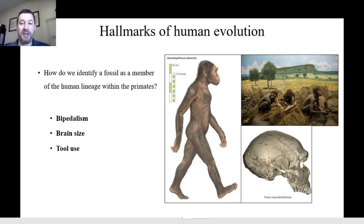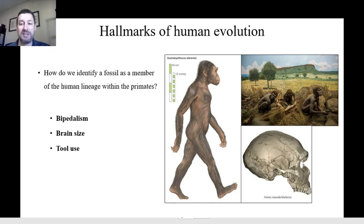There are three traits that we generally look for: bipedalism — walking upright on two legs — very large brain size, even larger relative to the body than in primates, and tool use. Tool use is found in some other species, but it's found in all of the human lineage and develops very rapidly over time, so that's also an important marker.